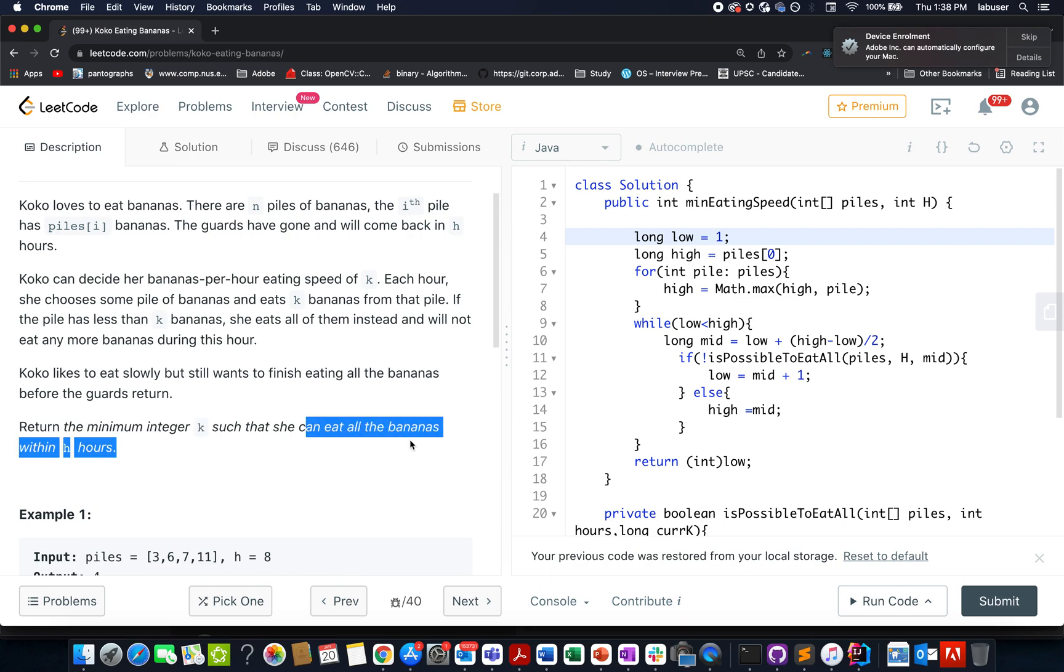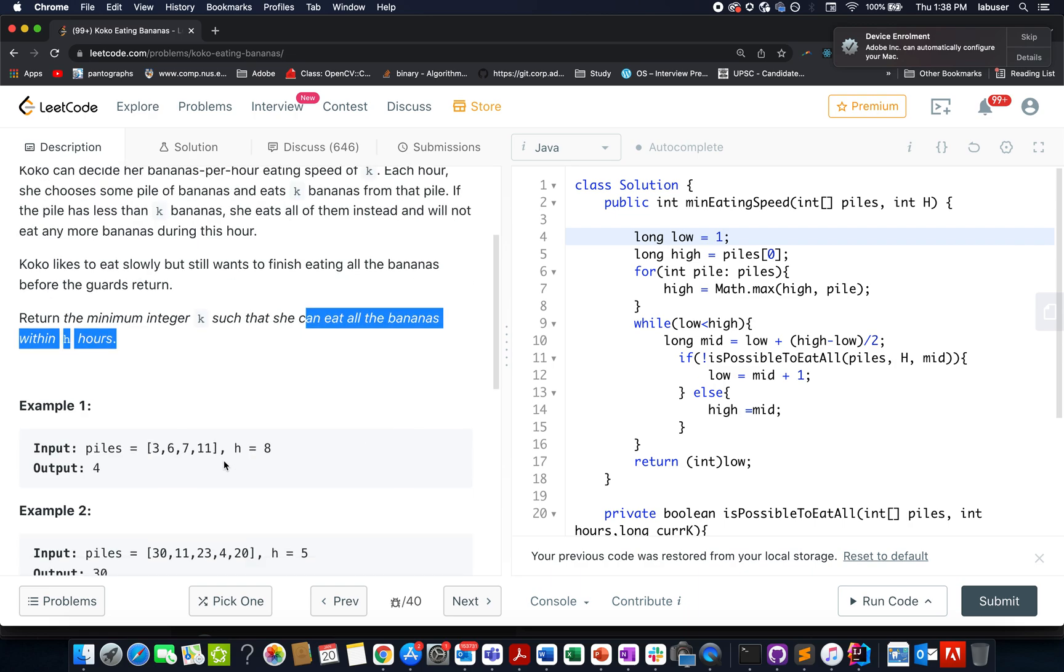What do we need to do in this question? We need to identify the minimum integer k such that she is able to eat all the bananas within the given h hours. So we are given the h count up till which she is allowed to eat these bananas and the rules of eating those bananas across these piles.